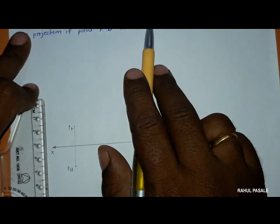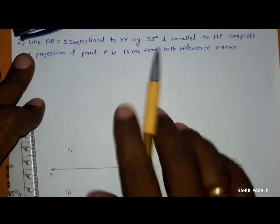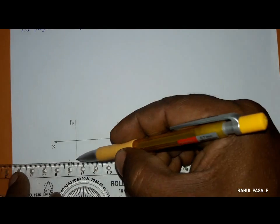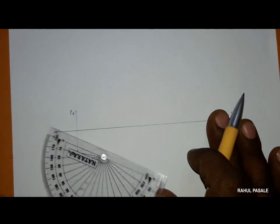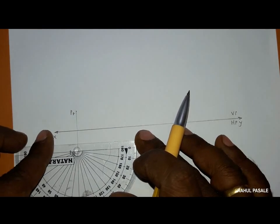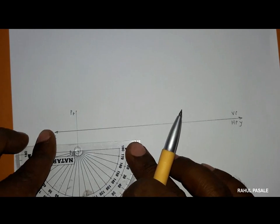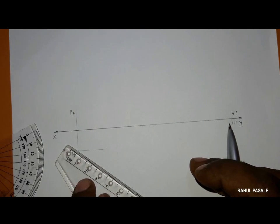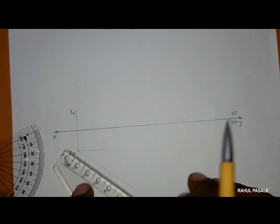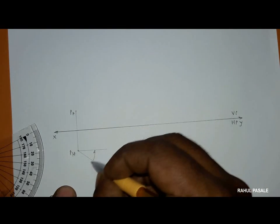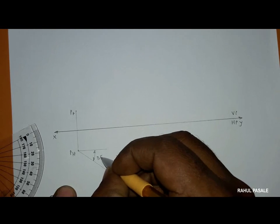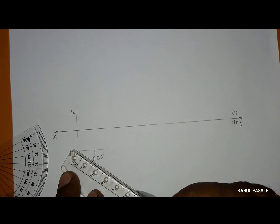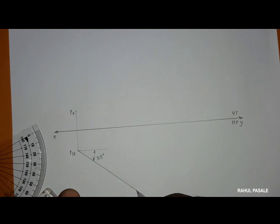This line is inclined to VP by 35 degrees, so we will mark that angle in the top view. I draw a small horizontal line through PH, then mark a ray at 35 degrees. The length of the line is 55 mm, so we mark 55 mm on this ray — that point will be QH.